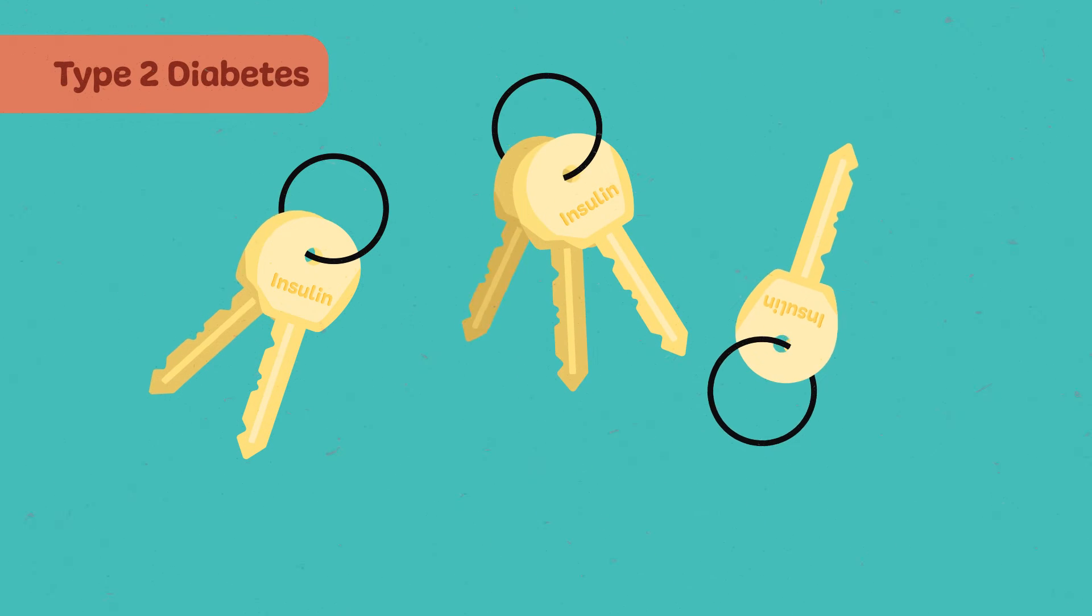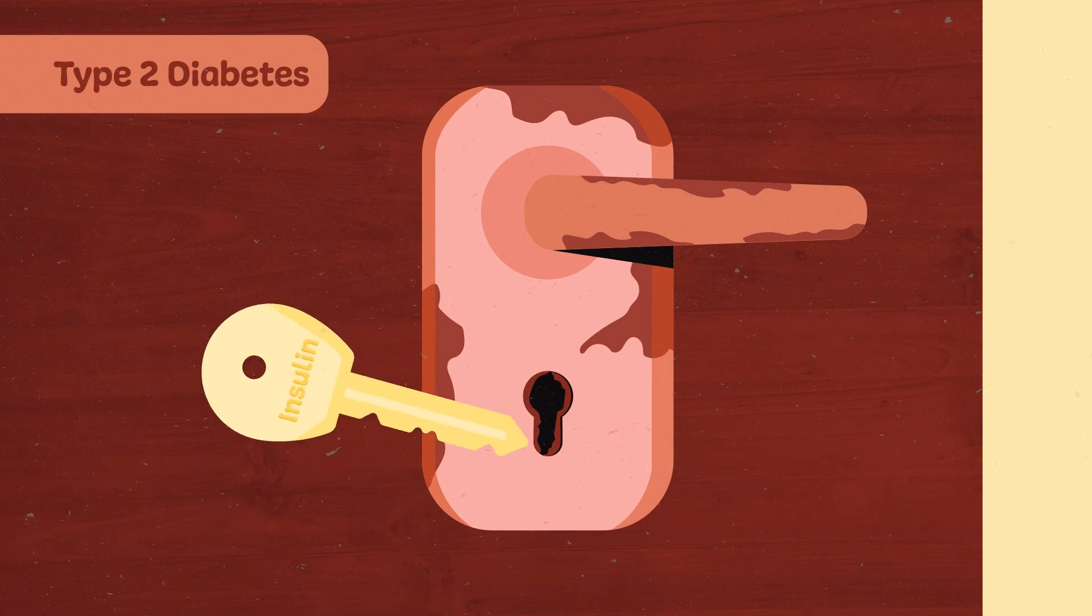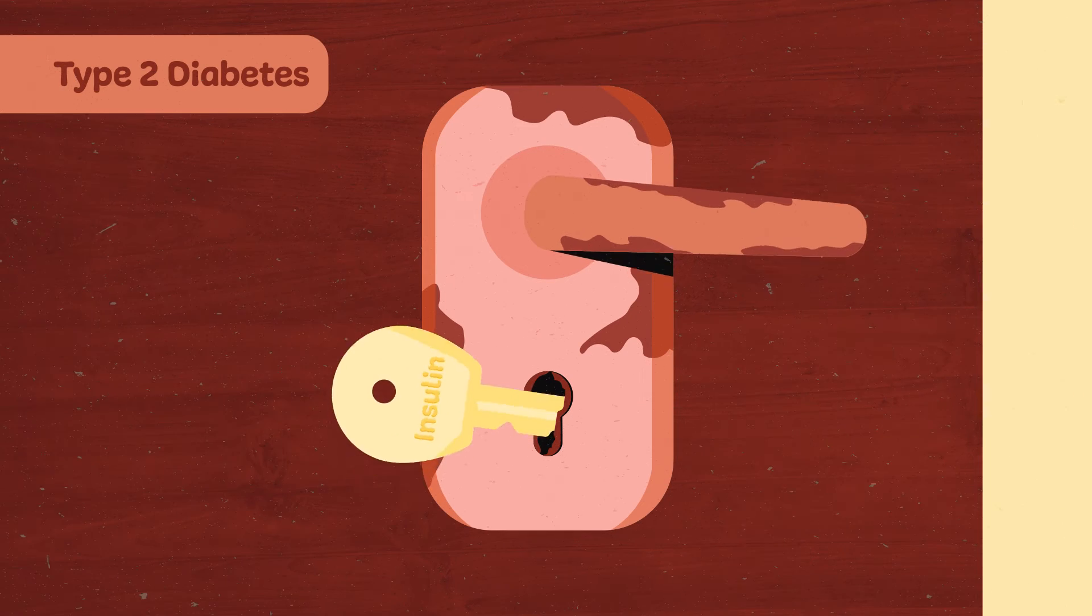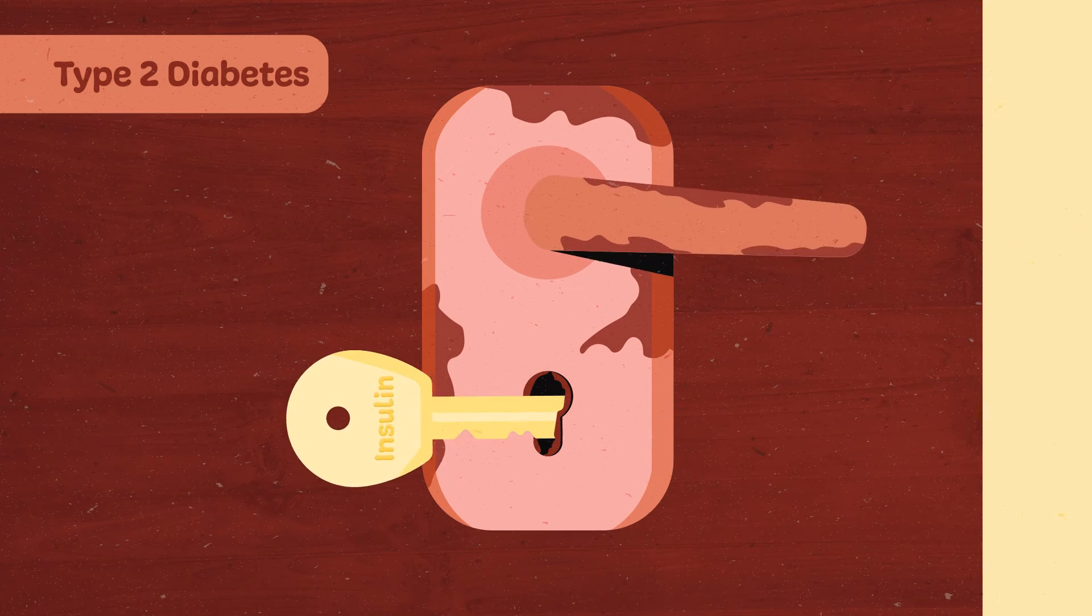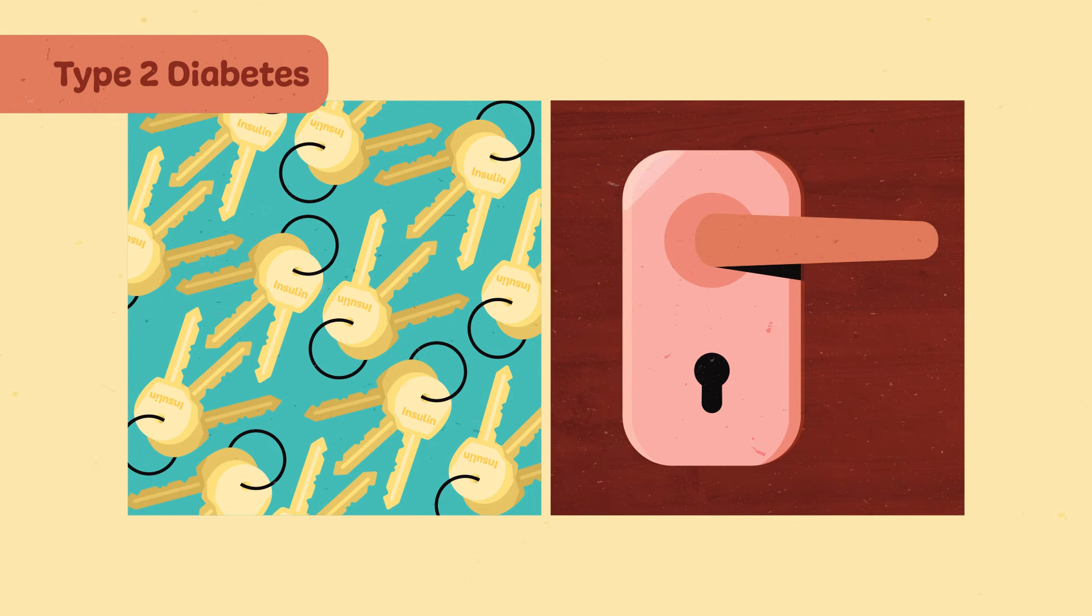In type 2 diabetes, there are less keys being made, but the keyhole is also rusty. This means that the keys also have trouble opening the doors to the cells. You either need more keys or a way to make the keyholes work better.